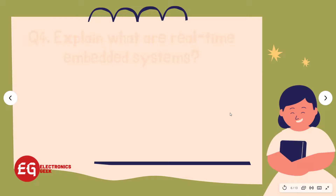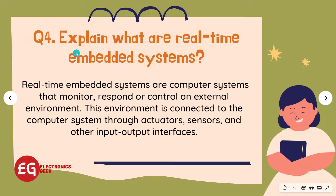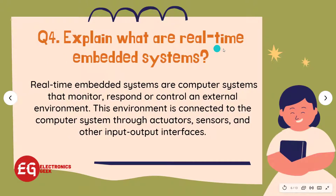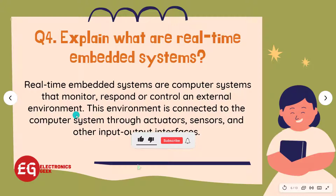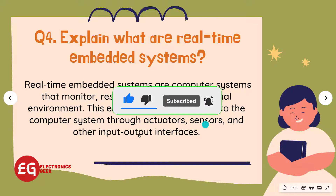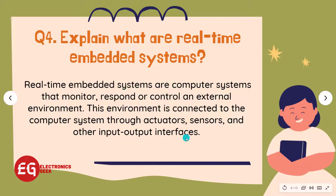Question 4: Explain what are real-time embedded systems? Answer: Real-time embedded systems are computer systems that monitor, respond to, or control an external environment. This environment is connected to the computer system through actuators, sensors, and other input-output interfaces.